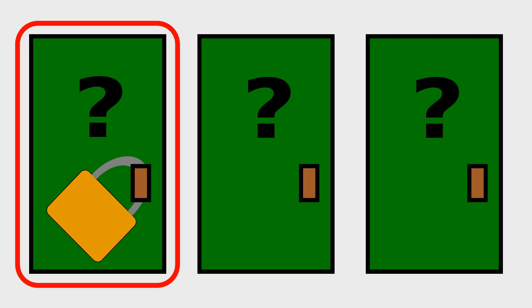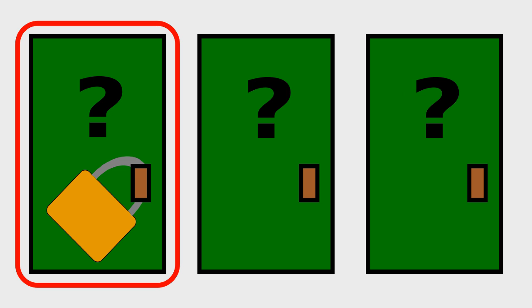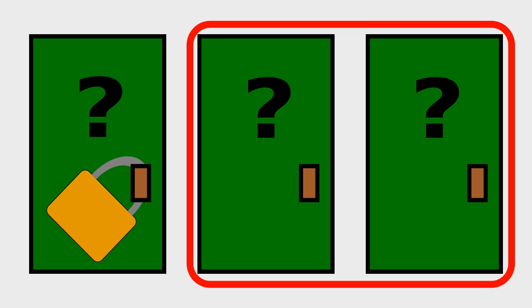Since I never revealed the door you chose, you are basically choosing between the single door and the other two doors. Which means, if you switch, you have a 67% chance of getting the cat, but only a 33% chance if you stay.